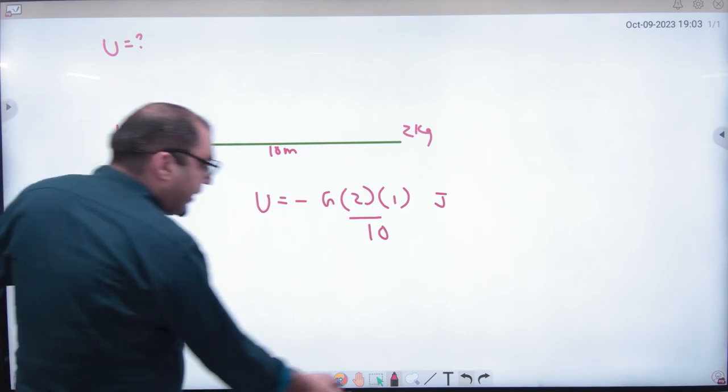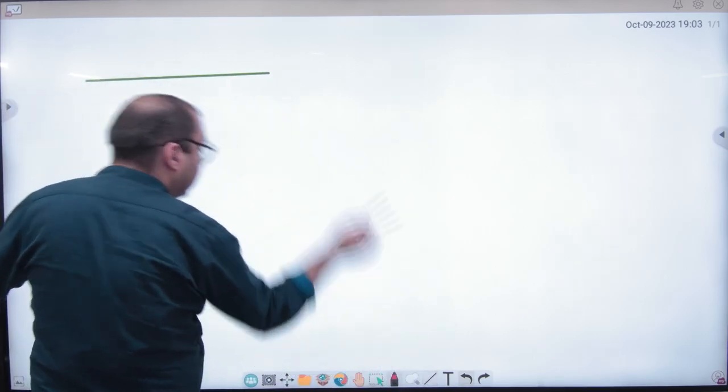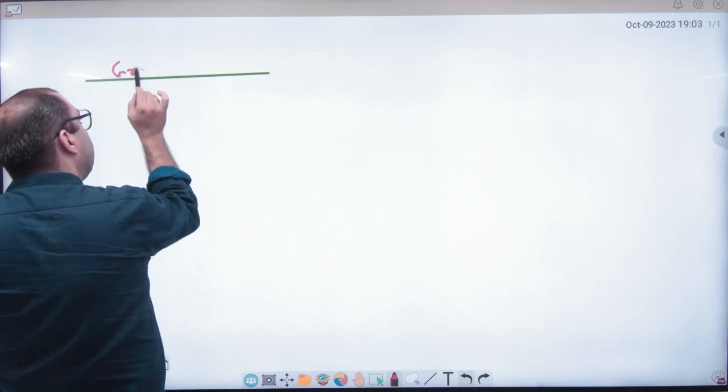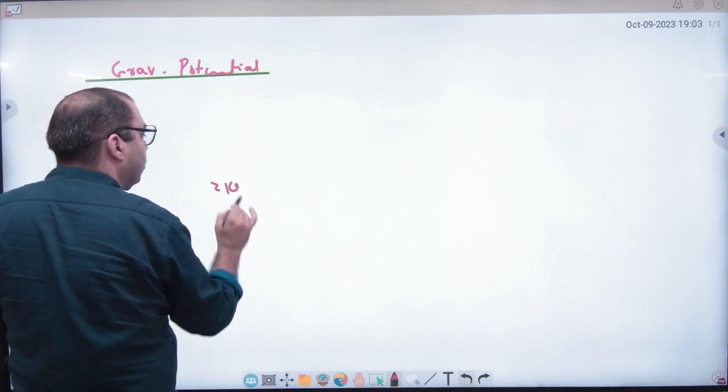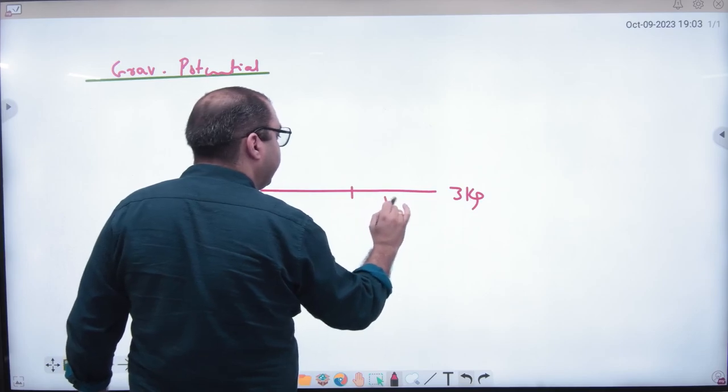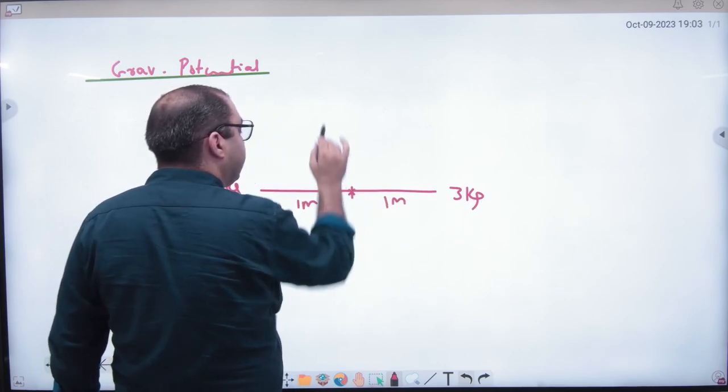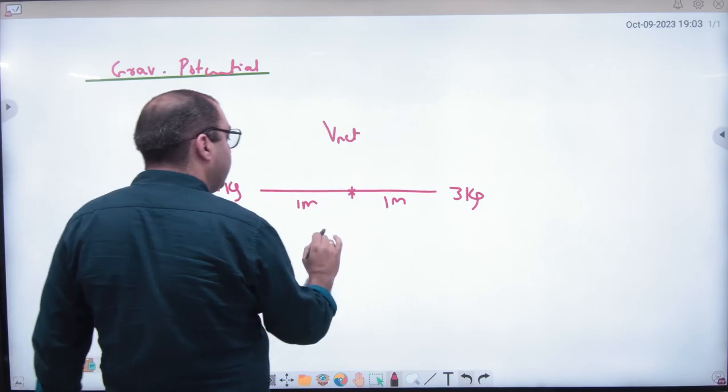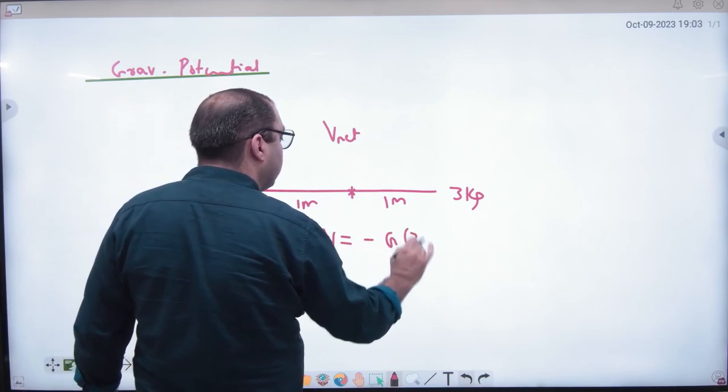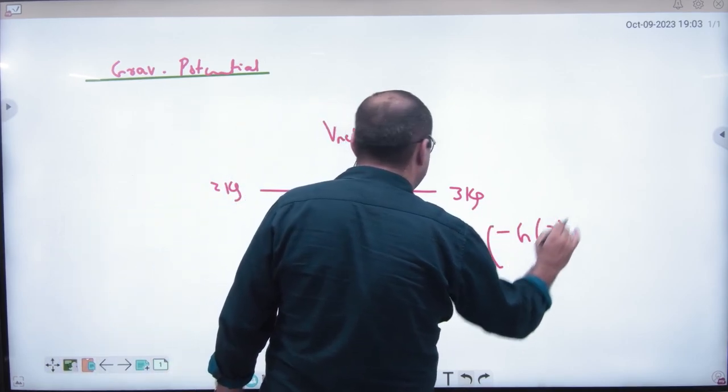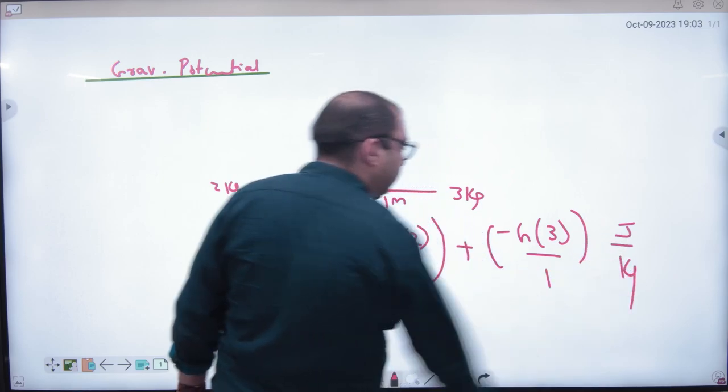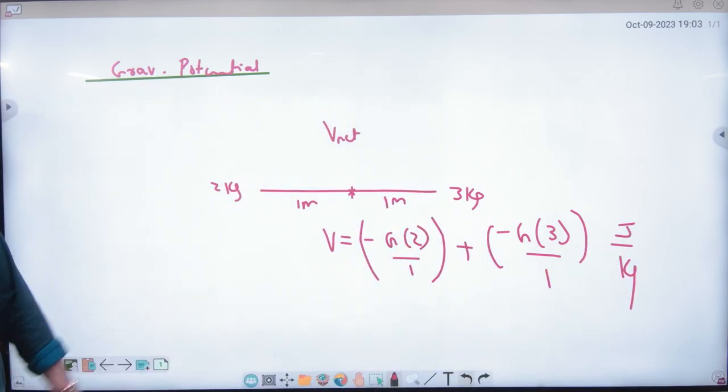Similarly next example will come of what? Potential. Gravitational potential example we haven't done yet. This gravitational potential is the same thing. Two kg is here, this is three kg, this is one meter, this is one meter, find net V here. Nothing to do. Two kg will apply what V here? Minus g into two divided by one. Similarly three kg will apply minus g into three divided by one. Joule per kg will be the answer. Nothing more. Add them. V and U are easy. And E and F require vector concept to be seen.